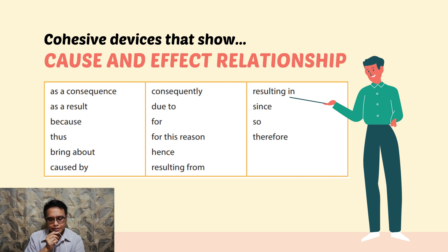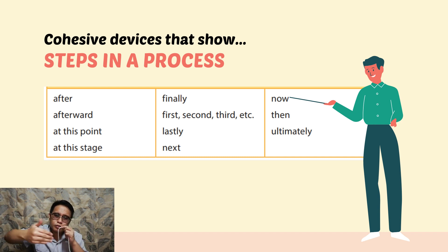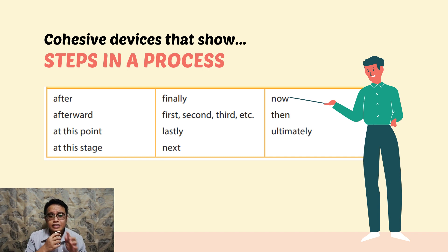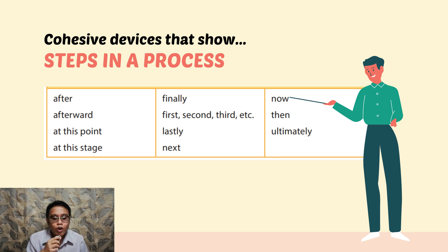Lastly, these are cohesive devices that show steps in a process. This is different from cause and effect — this is about sequential steps. You see these when following a recipe or a cookbook. They include: after, afterward, at this point, at this stage, finally, first, second, third, lastly, next, now, then, and ultimately.